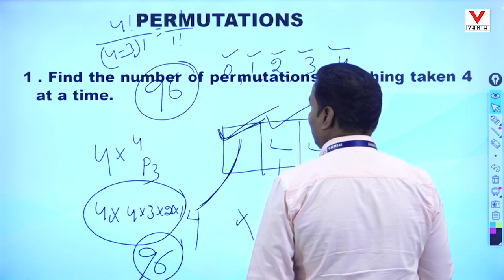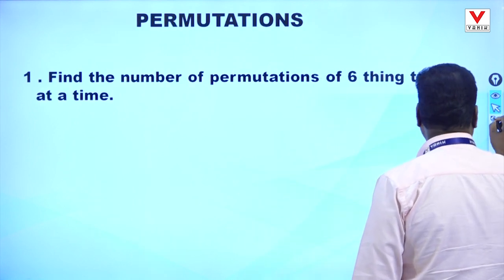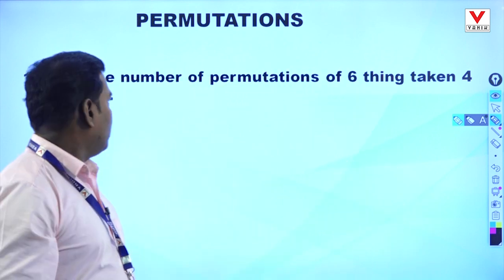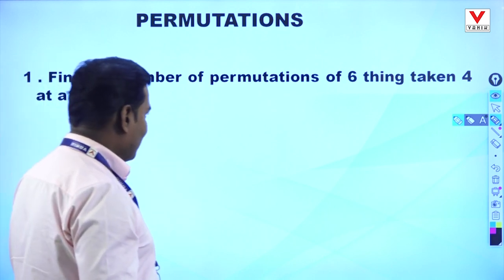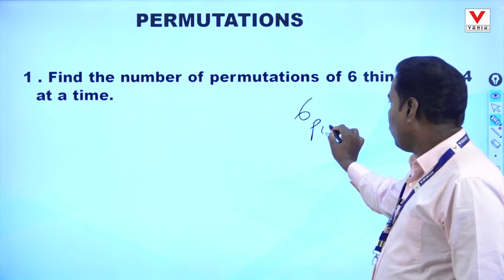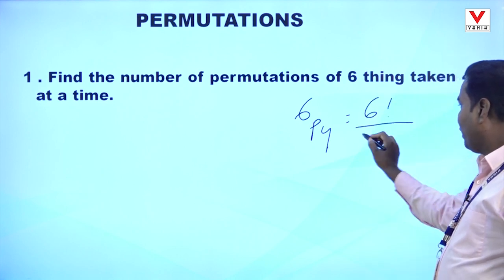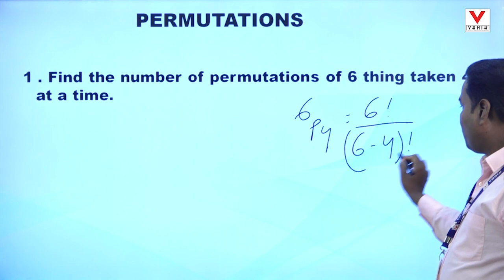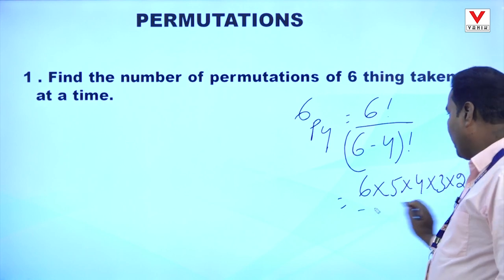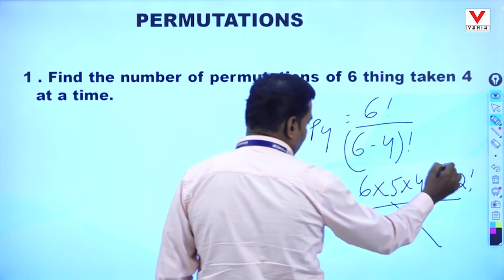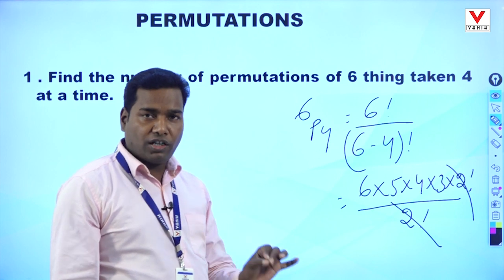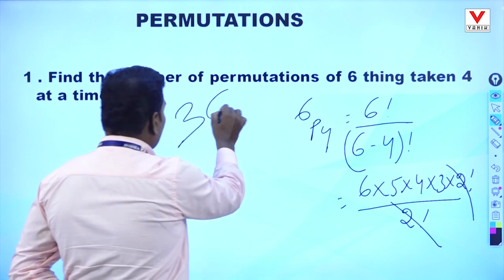Now some conceptual questions. Question 1: Find the number of permutations of 6 things taken 4 at a time — that is 6P4. 6P4 = 6 factorial divided by (6 minus 4) factorial = 6 factorial divided by 2 factorial. That gives 6 into 5 into 4 into 3 = 360. The answer is 360.